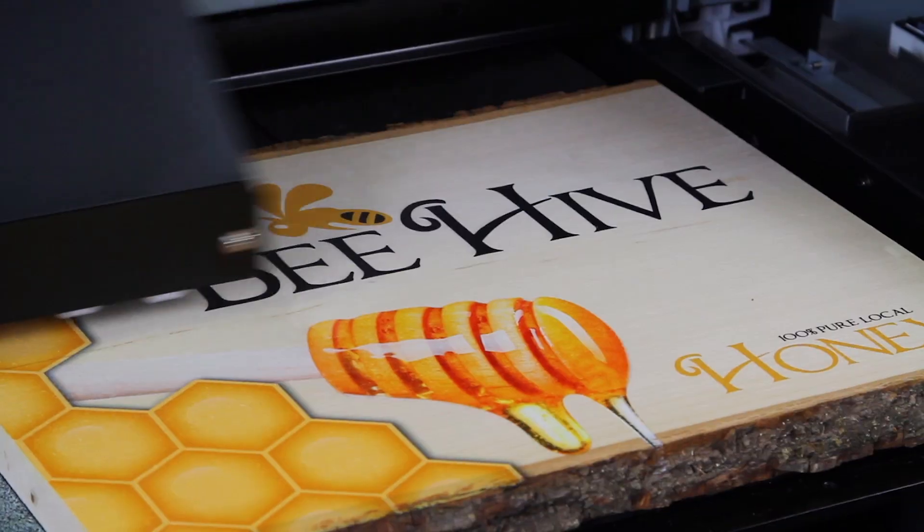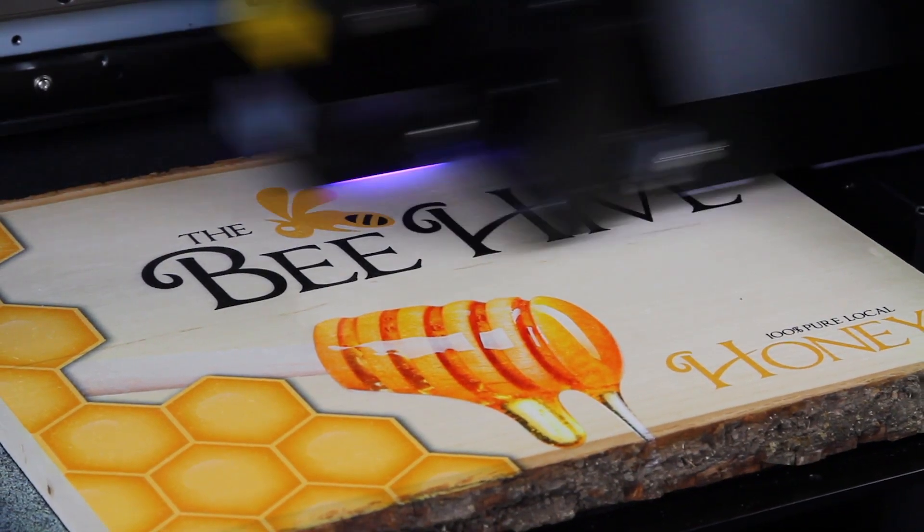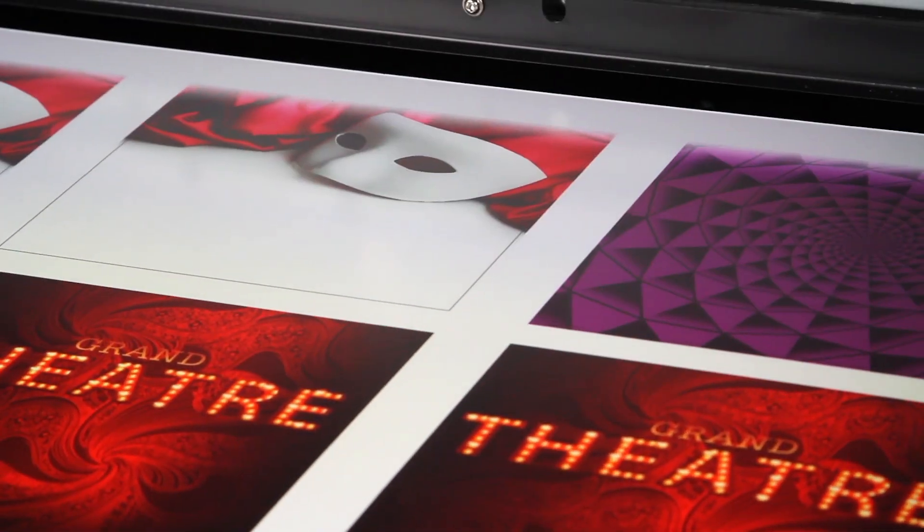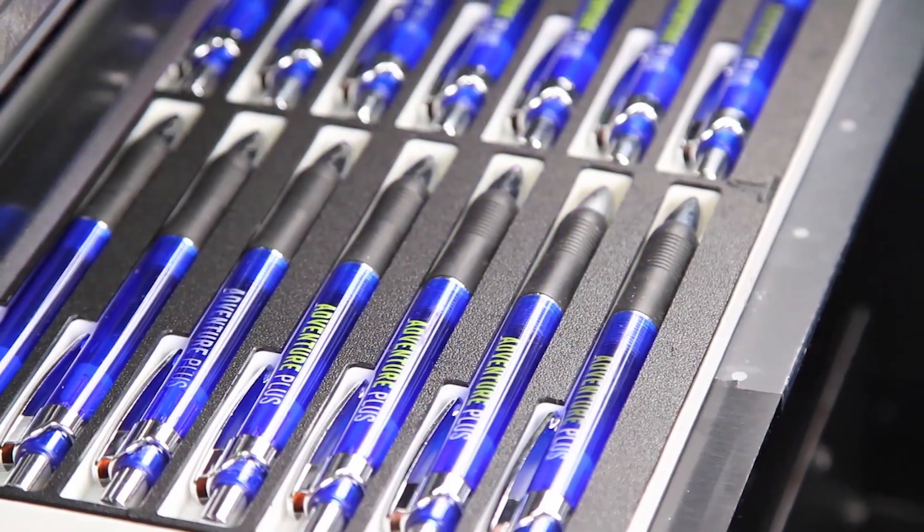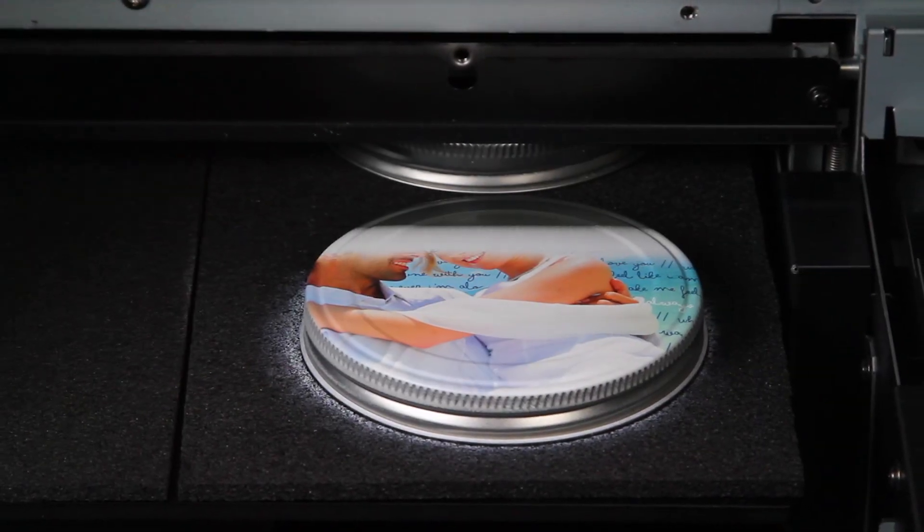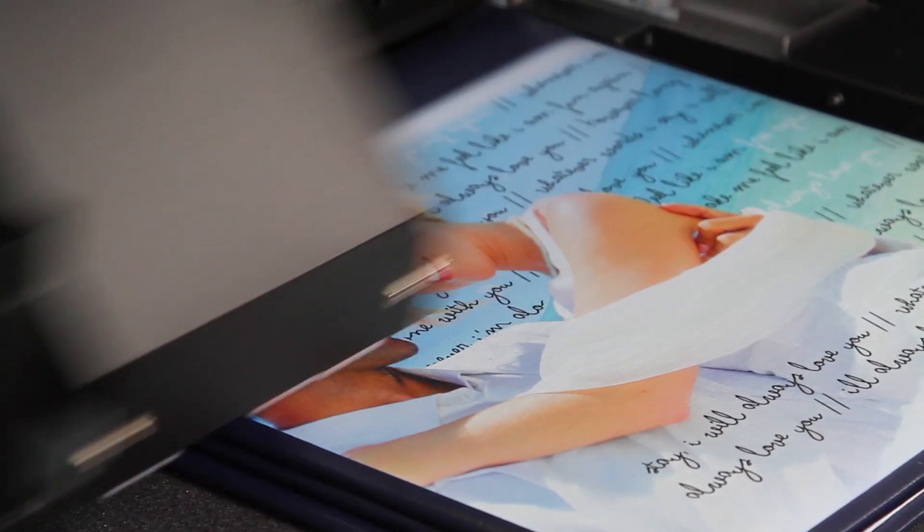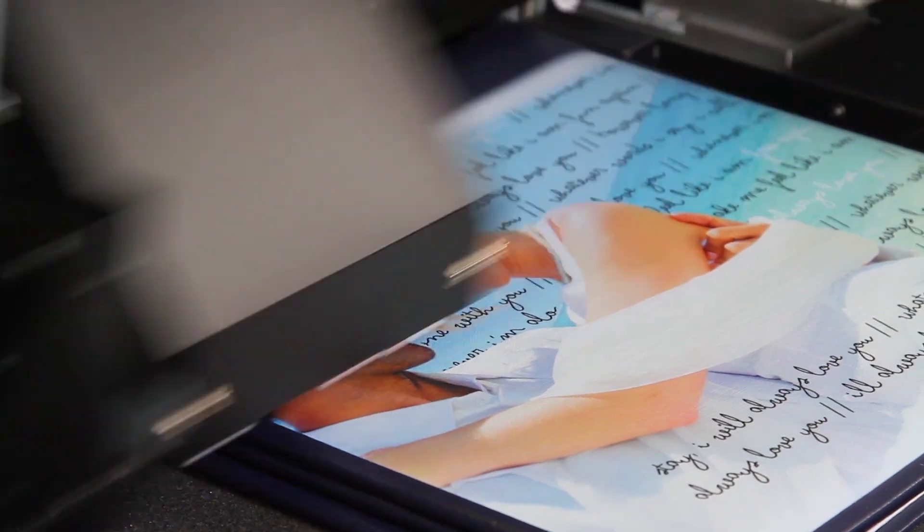You can print directly onto acrylic, wood, board, canvas, plastic, metal, and even soft materials like leather and fabric.